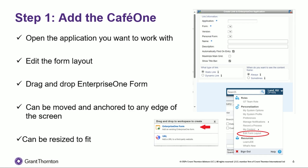Now we're going to talk through what I essentially think of as a two-step process for creating a Cafe One — step one being adding the Cafe One, and then step two is setting it up. For step one, to add a Cafe One to an existing application, you want to open the application that you are wanting to work with. You're going to go up to your username, click on it to get the drop-down, and click Edit Form Layout. Then you're going to click Add, select the Enterprise One form, and drag and drop it to the location on the screen you want. When you drag and drop it, it can be moved and anchored to any edge of your screen, similar to how the carousel in JDE works — across the bottom, one of the sides, or the top. You can also resize it to be any size you need for the data you'll be pulling in.